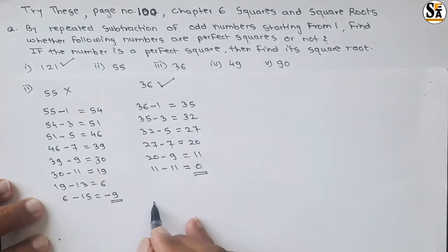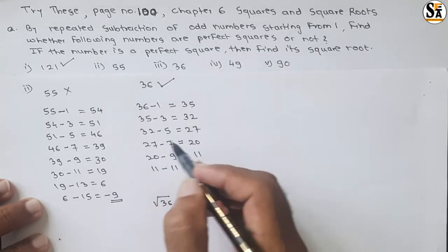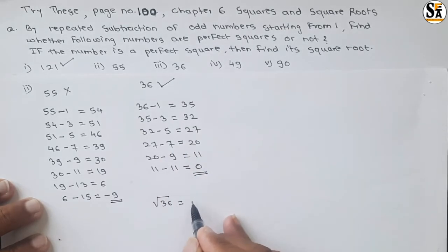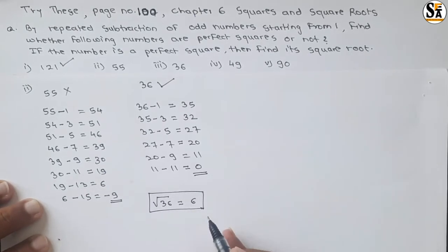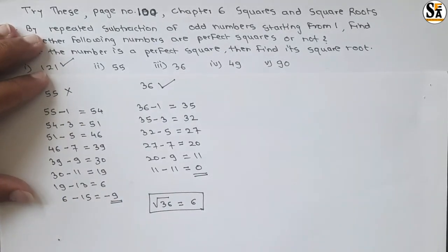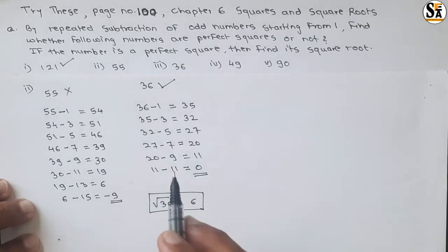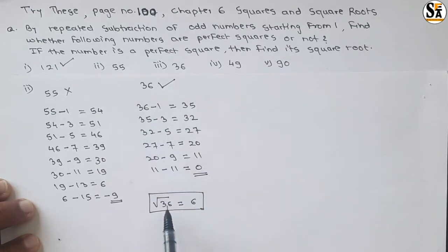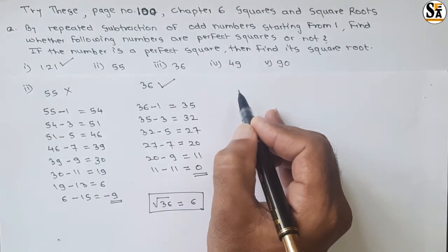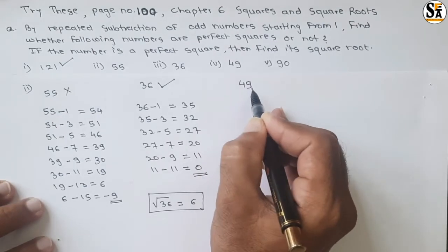Since we get 0, 36 is a perfect square. The square root of 36 is the number of steps: 1, 2, 3, 4, 5, 6 — that is 6 steps. So the square root of 36 is 6. Just subtract odd numbers starting with 1, and if you get 0, count the number of steps.